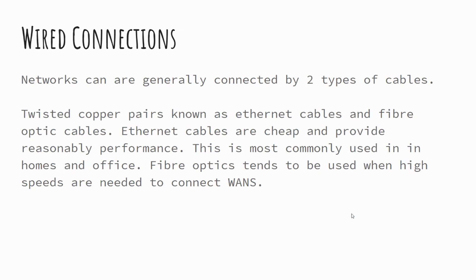There are two main ways in which we create wired connections. The most common is ethernet cables, which are twisted copper pairs that we spoke about in a previous lesson. These are cheap and provide reasonably quick transfer speeds for most home or office networks.